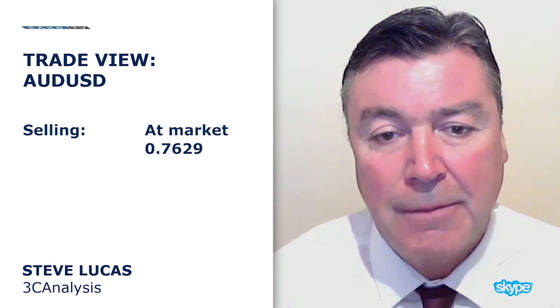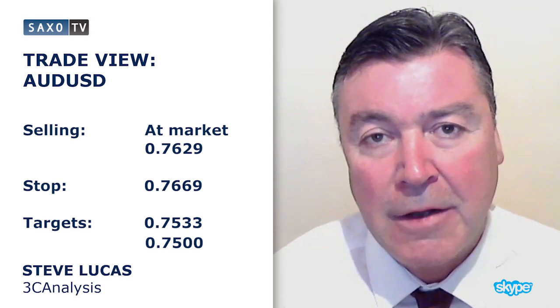So today I'm selling at market. I'm also selling at 76.29, which is marginally below today's high in Asia. The stop on that is at 76.69 — that's a 62% recovery to the losses posted since last week's high. Targets are 75.33, which is this month's six-year low, and 75 cents, which is the RBA target I mentioned.